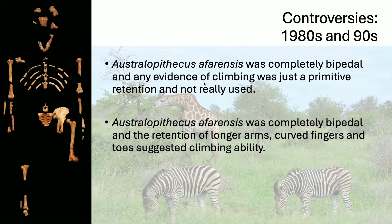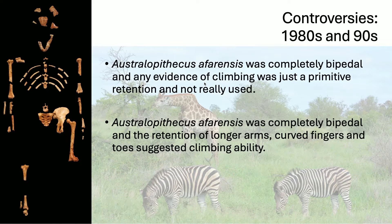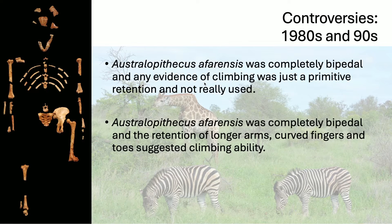There was one group that said Australopithecus afarensis was completely bipedal and the evidence suggesting climbing were just primitive retentions not actually used — Owen Lovejoy and Bill Kimball held this view, arguing that once you crossed a threshold you were a biped and didn't need climbing anymore. The other group, including Jack Stern and Randy Susman from Stony Brook University, argued that the retention of longer arms, curved fingers, and toes suggested actual climbing ability. Jack Stern was a committed adaptationist — everything in morphology had to have a functional use.